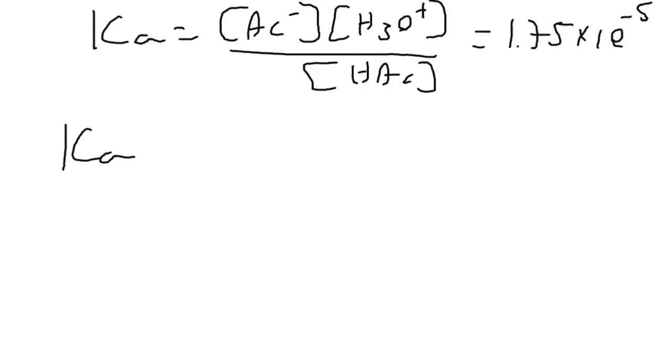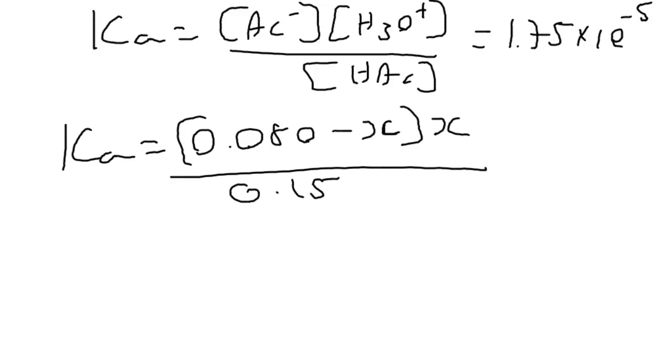So from our ICE table, the E is our equilibrium concentration, so we can say that this acetate concentration is 0.08 plus x, H3O+ is just x, multiply by x, and divide by 0.15 minus x.